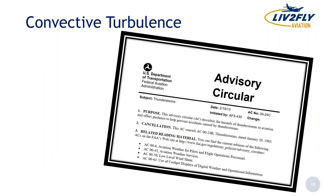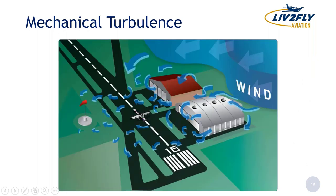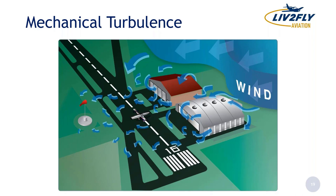There's an advisory circular the FAA puts out — AC 00-24C — and it would be advisable for pilots to review it. It has good information about hazardous flying around thunderstorms and low-level wind shear. Mechanical turbulence is something we see all the time. Some of our bigger airports have large hangars, and smaller airports may have trees, and we have to deal with that mechanical turbulence. It's also caused by hills, mountains, and terrain that as the wind blows over them can cause a real bumpy ride.